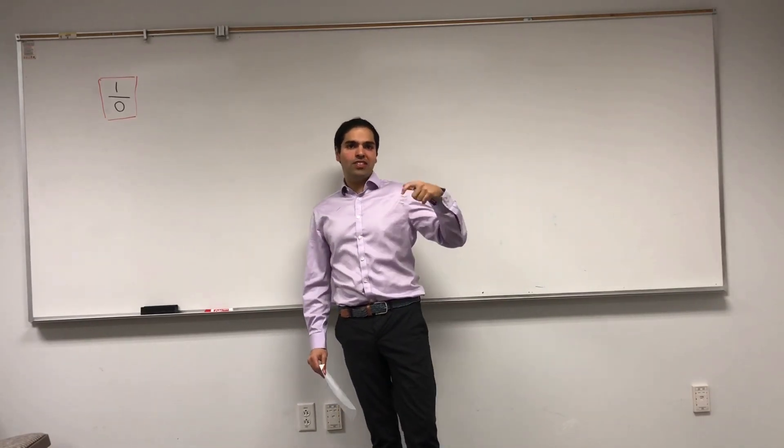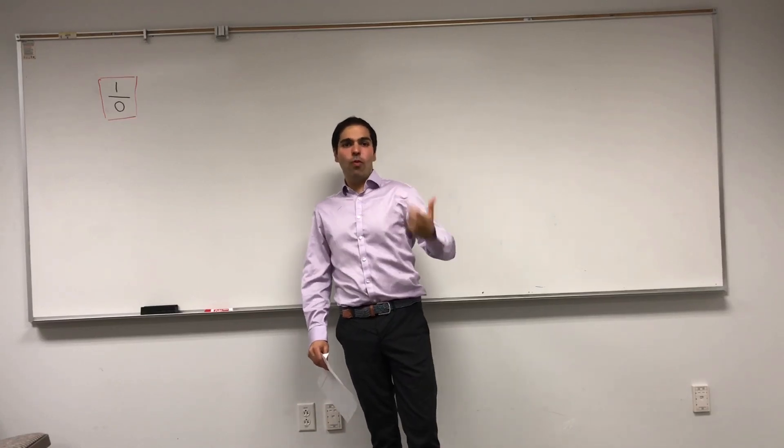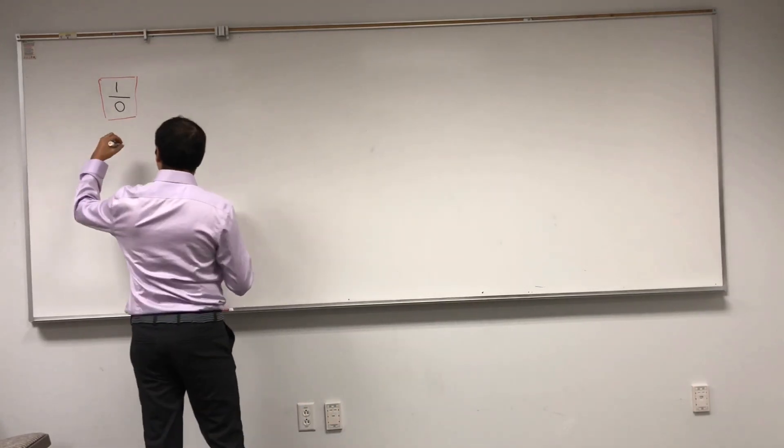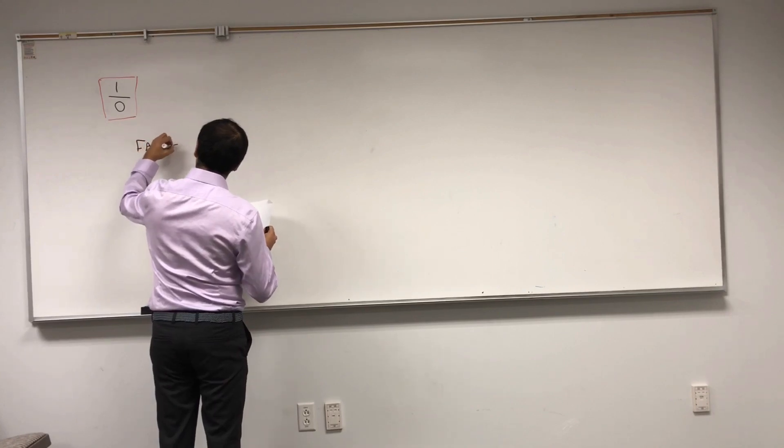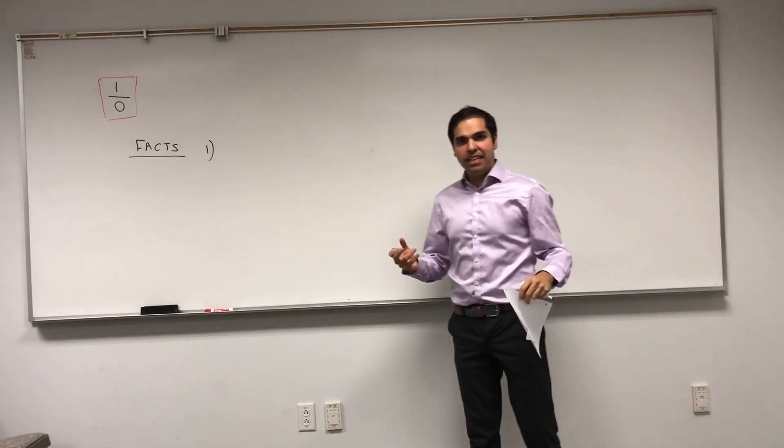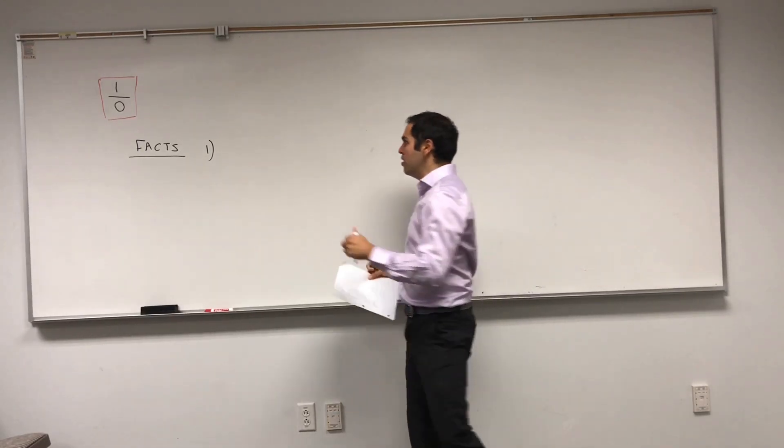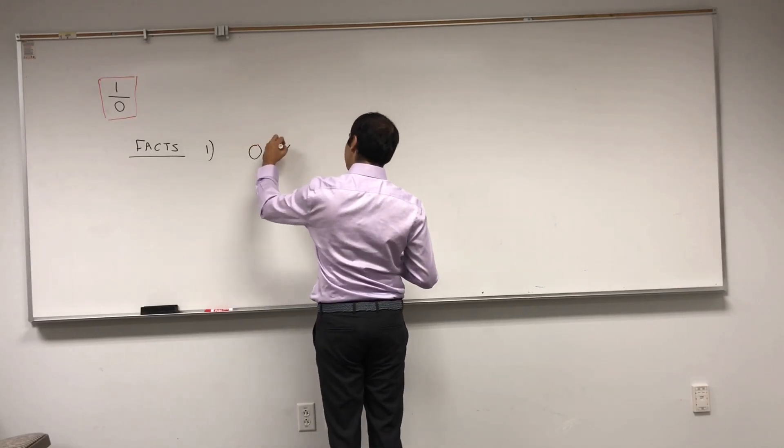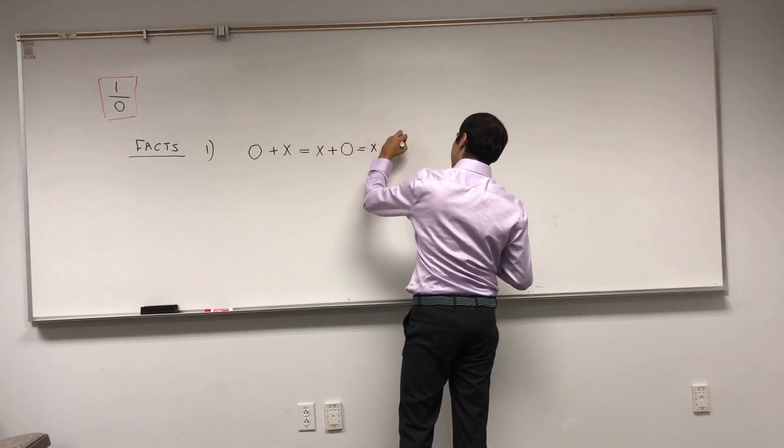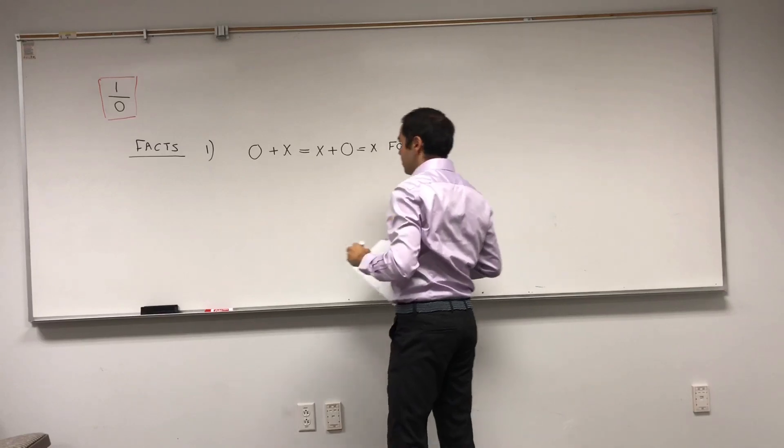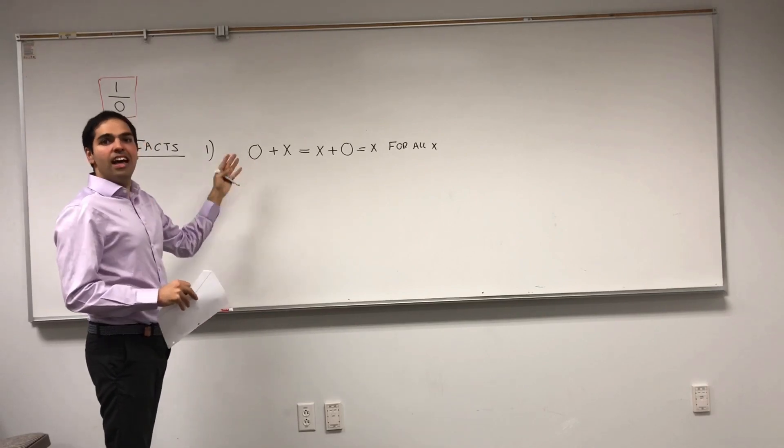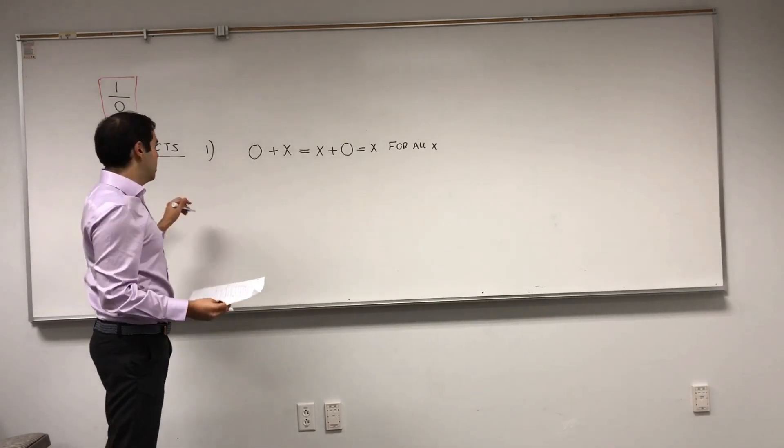Namely, 0 is what's called the unit for addition, and 1 is called the unit for multiplication. So, here are a couple of facts. First of all, 0 algebraically is actually defined to be the number such that 0 plus x equals x plus 0 equals x for all x. Okay, so again, algebraically adding by 0 doesn't do anything, and this is actually the definition of 0 in this case.